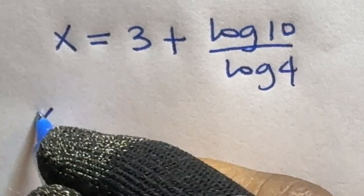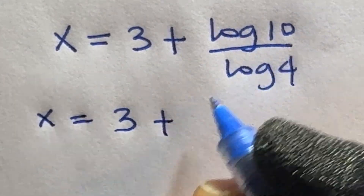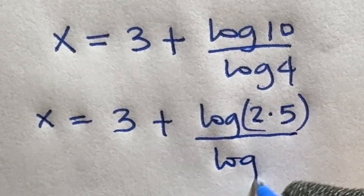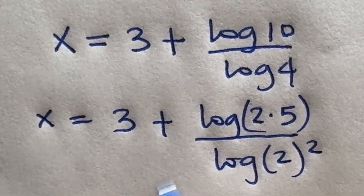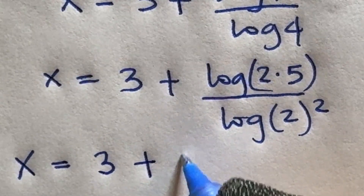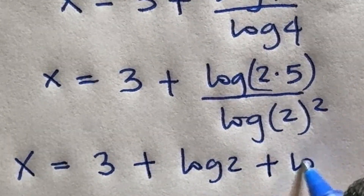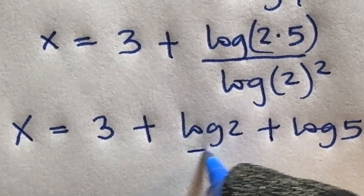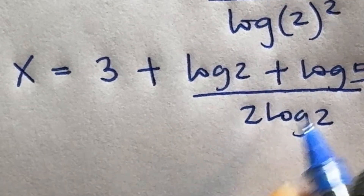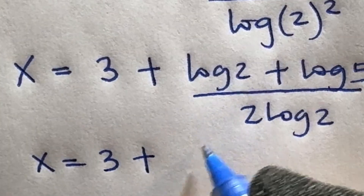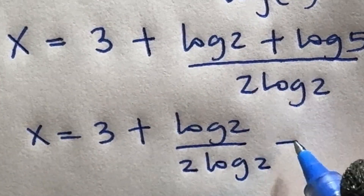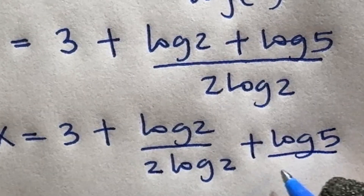So x becomes 3 plus — I will express log 10 as log(2 times 5) and log 4 as log(2 raised to power 2), which is 2 log 2. Breaking this apart: log 2 plus log 5, all divided by 2 log 2. Separating the division gives log 2 divided by 2 log 2, plus log 5 divided by 2 log 2.